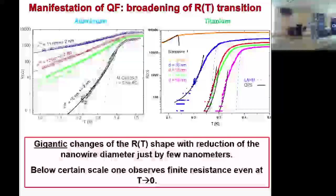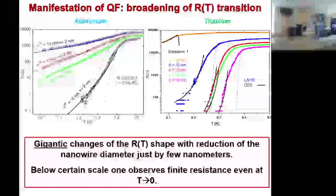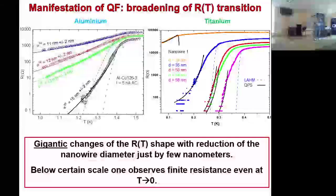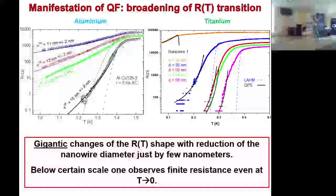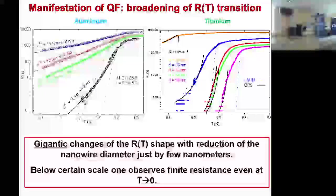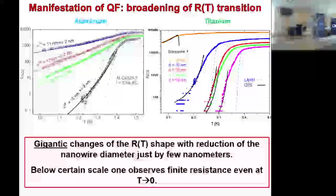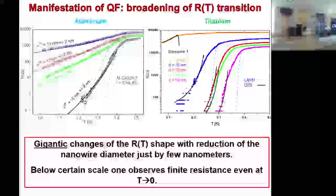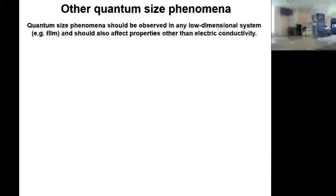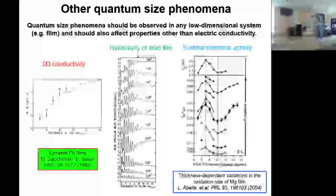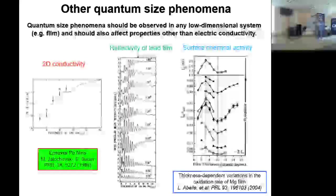Сплошные линии — это фиты по модели квантовых флуктуаций. Для более низкотемпературного сверхпроводника — титана — тот же эффект наблюдается на размерах уже существенно больше, порядка 30 нанометров, что вполне реально достигается технологически. Квантовые размерные эффекты наблюдаются на огромном количестве физических и даже химических явлений: в тонких плёнках сопротивление немонотонно зависит от толщины, отражательная способность поверхности меняется немонотонно, меняется и химическая активность.